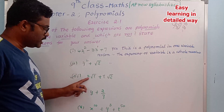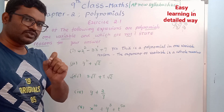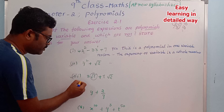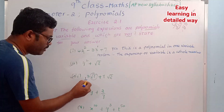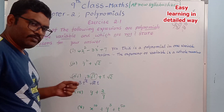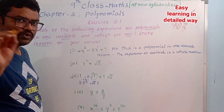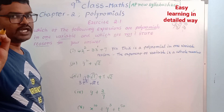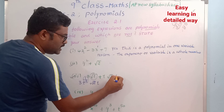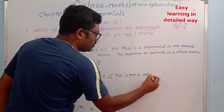Third one: 3 times square root of t plus t times root 2. There is one variable, t. But root t equals t to the power of 1/2, and root 2 times t gives exponent 1/2. Since 1/2 is not a whole number and not an integer — it is a rational number — this is not a polynomial.